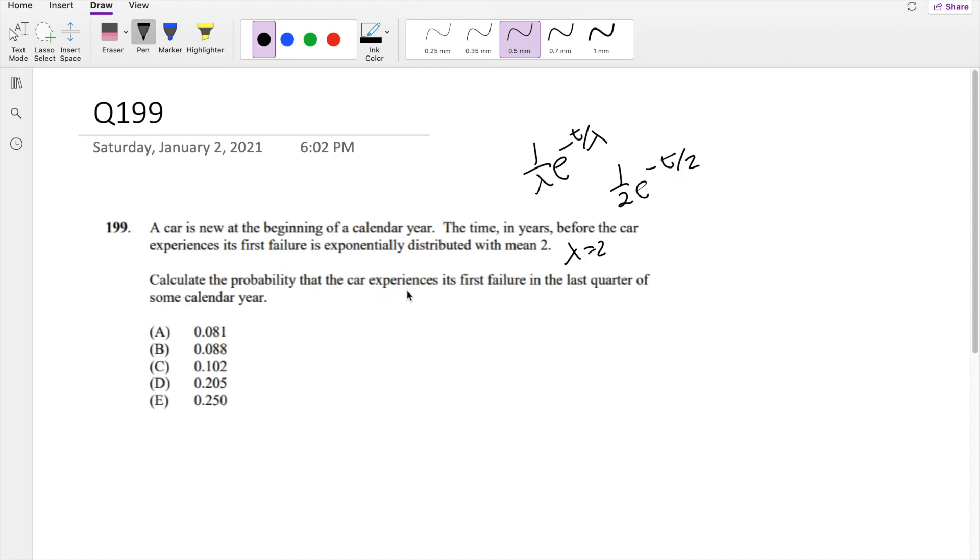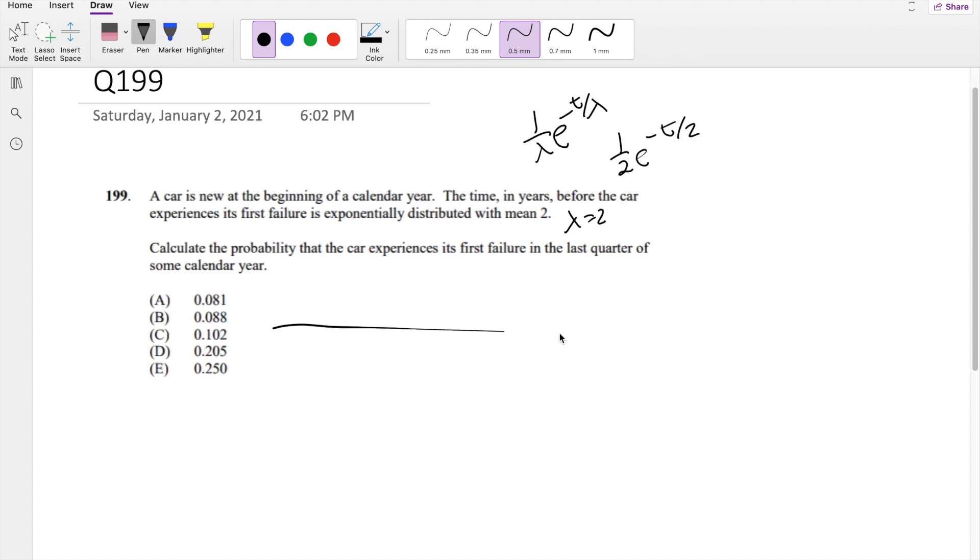But anyways, we're looking for the probability that a car experiences its first failure in the last quarter of some year. So let's say this is our timeline, let's say this is our first year. If it's our first year, basically it's asking what is the probability that x is greater than 0.75, where the first time they experiences some failure is in the last quarter. But let's say it's like from year 1 to year 2, like let's say it's this calendar year. Then the probability is different, right?